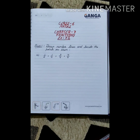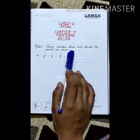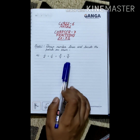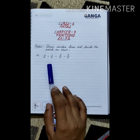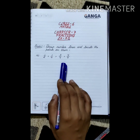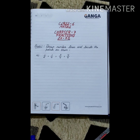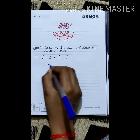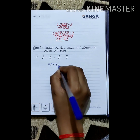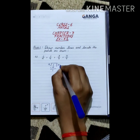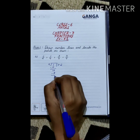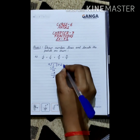Let's start exercise 7.2, question 1. Draw number lines and locate the points: 1 by 2, 1 by 4, 3 by 4, 4 by 4. Apart from 1 by 2, all remaining numbers have the same denominator, that is 4. We will first divide 1 by 4 to determine placement. 4 goes into 10 twice — 4 twos are 8, remainder 2; we apply the decimal point, add 0, 4 into 20, giving 5.